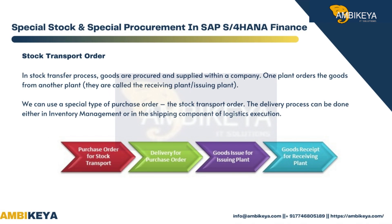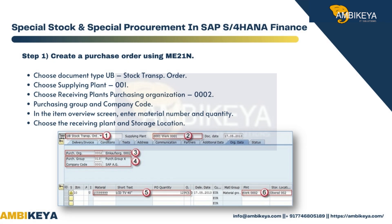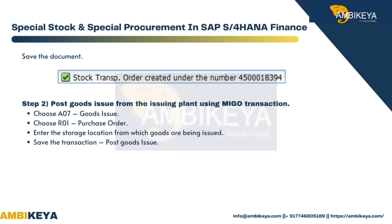Stock Transport Order: In the stock transfer process, goods are procured and supplied within a company — one plant orders goods from another plant, called the receiving plant and issuing plant. We can use a special type of purchase order: the stock transport order. The delivery process can be done either in inventory management or in the shipping component of logistics execution. Step 1: Create a purchase order using ME21N, choose document type UB for stock transport order, choose supplying plant 0001, choose receiving plant's purchasing organization 0002, purchasing group and company code. In the item overview screen, enter material number, quantity, receiving plant, and storage location, then save.